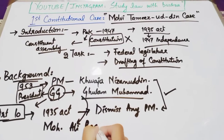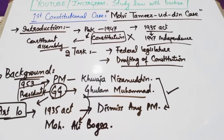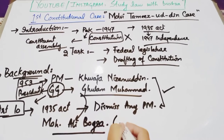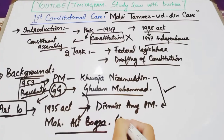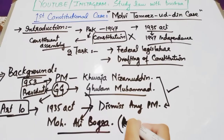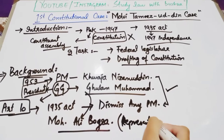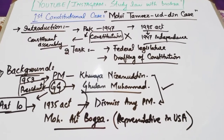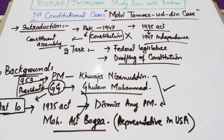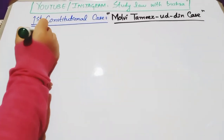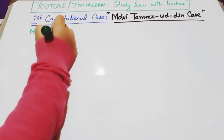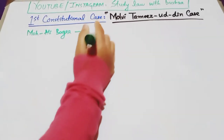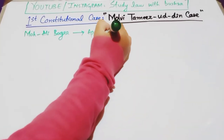جیسے ہی خواجہ نظام الدین کا dismissal ہوا، ایک new prime minister appoint کیا گیا — محمد علی بوگرہ، جو اس وقت USA میں Pakistan کے diplomatic representative تھے۔ جیسے ہی محمد علی بوگرہ prime minister بنے، وہ naturally apprehensive تھے of the possible repetition of misuse of power by the governor general۔